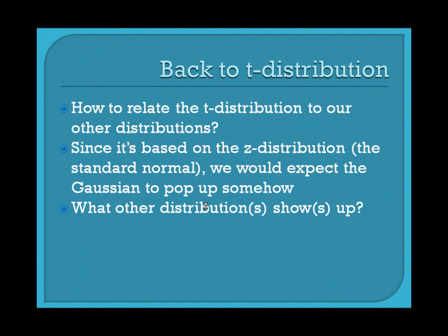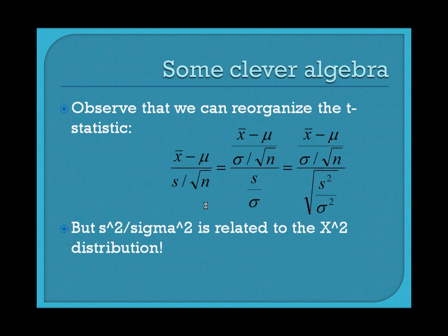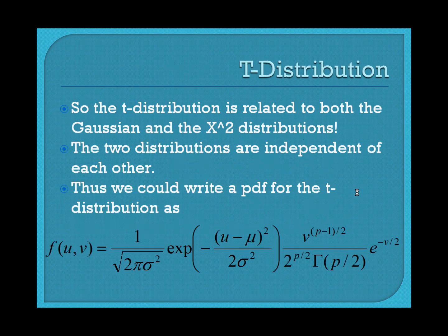How do we relate the t-distribution back to other distributions? We know two things: if sample size n goes to infinity, we return to the standard normal distribution with mean zero and variance one. We also need to account for degrees of freedom, which connects to the chi-squared distribution. We can reorganize the t-statistic in terms of sigmas — we get a z-statistic on top and the square root of s-squared over sigma-squared on the bottom. Since s-squared over sigma-squared characterizes the chi-squared distribution, the t-distribution can be thought of as involving a normal distribution and a chi-squared distribution together.